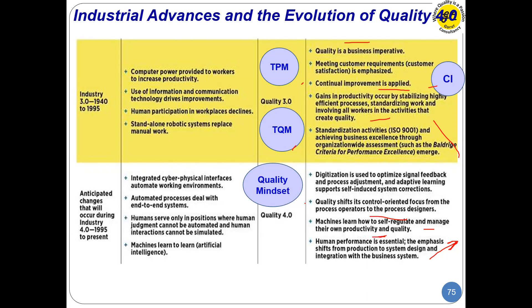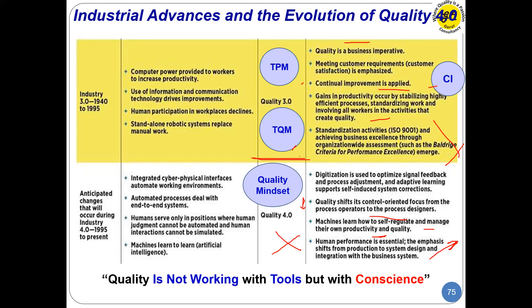Quality 4.0 involves digitization, optimal signal feedback, and machines that learn to self-regulate and manage. To teach a machine, you must be knowledgeable yourself — human performance is essential. Quality 1.0 through 3.0 is fundamentally about mindset. If that mindset is lacking — if ISO or IATF implementation is poor, MRMs are not done, metrics are bad, nobody takes responsibility — then the mindset is not there and you cannot transition to 4.0. As the final thought: quality is not about working with rules, but with conscience.